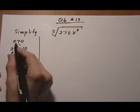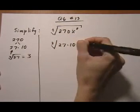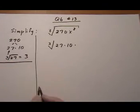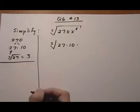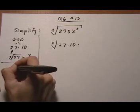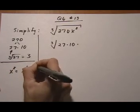So 270, I'm going to rewrite it as 27 times 10. Now I also want to rewrite the x to the eighth power. And again, I want to rewrite it so that I have a perfect cube. So if I rewrite x to the eighth as x to the sixth times x squared,